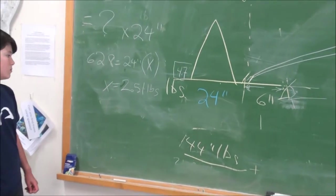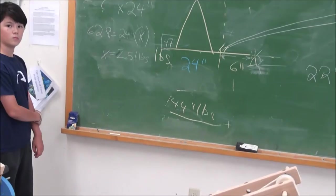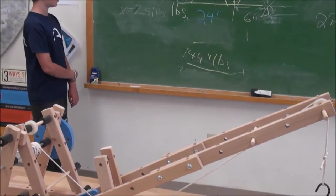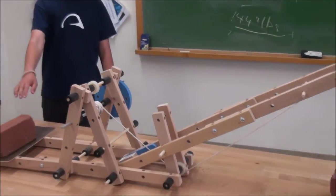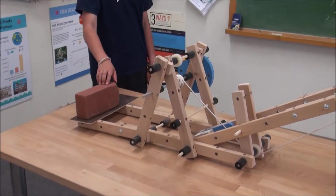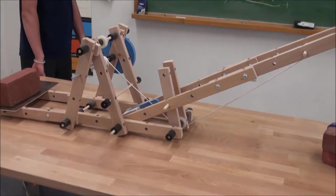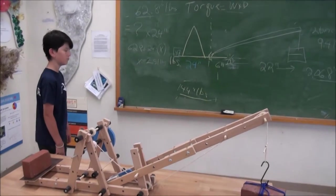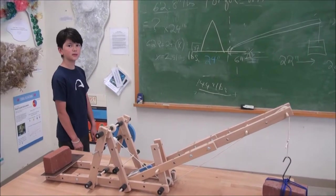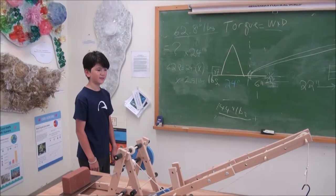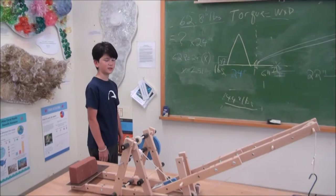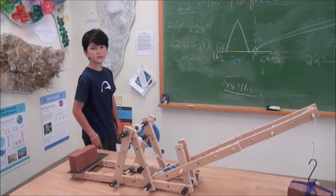So if we added 2.51 pounds, where would we put it? We would add it to the crane end, at the end, 24 inches from the pivot point. So if we did that, everything would balance. Is that a good thing? No, because you have to factor in things like wind and you have to leave yourself a safety margin.